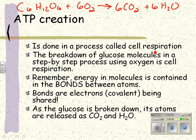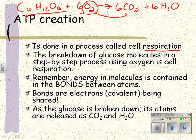Cell respiration is called respiration because it involves taking in oxygen and producing carbon dioxide. It's also called internal respiration. External respiration is breathing, commonly known as breathing. Internal respiration is taking the food you eat — we're going to use the carbohydrate glucose — and step by step using oxygen to break it down. Remember that the energy is in the bonds between atoms. Bonds are electrons being shared, and as the glucose is broken down it produces carbon dioxide and water.